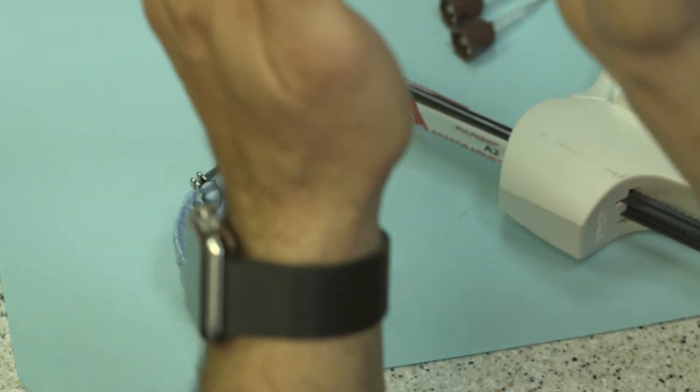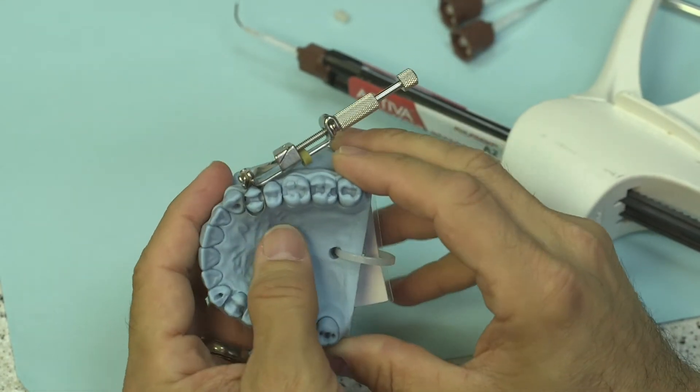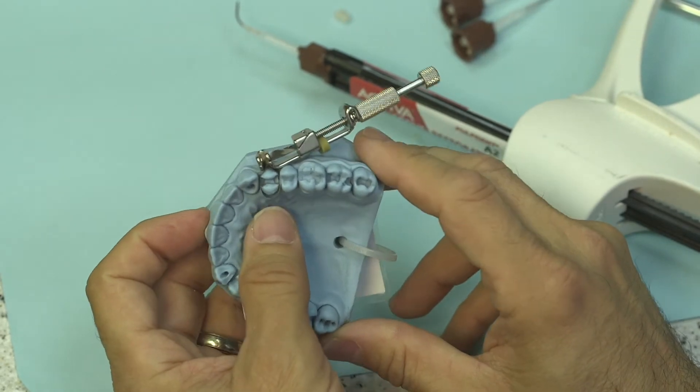In that capacity it's going to constrict the band a lot better toward the gingival and give you a better overall anatomical seal in the restoration that you're going to be placing.